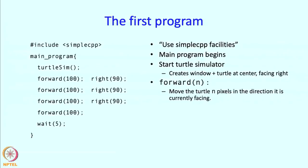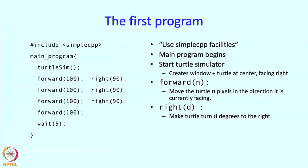Then you see the command forward 100. Well, in general this command is forward n where n can be any number. So in this case the turtle is being commanded to move n pixels in the direction in which it is currently facing. Right D, where D is expected to be the angle in degrees, tells the turtle to turn right. You can have a similar left command as well. And wait tells the turtle to do nothing for t seconds. So these t seconds, or in this case 5 seconds, are what you are given to admire the drawing that the turtle has drawn.